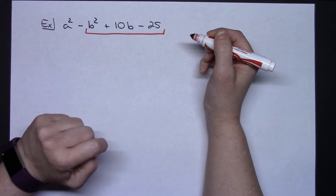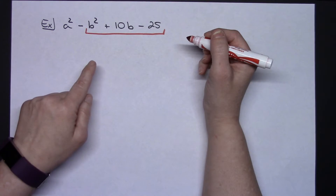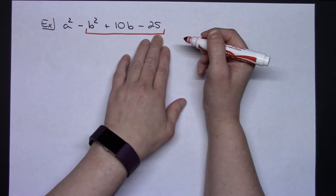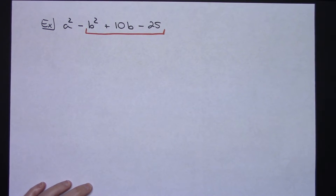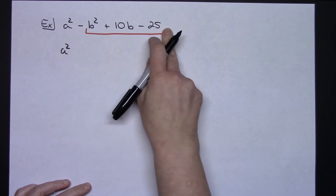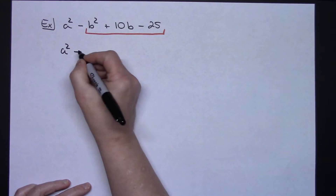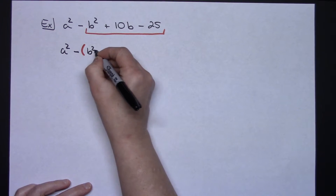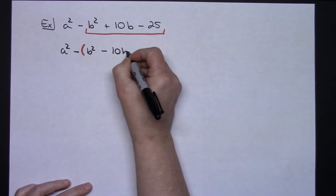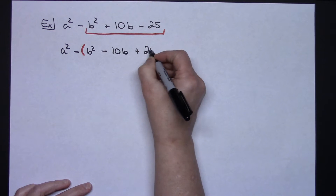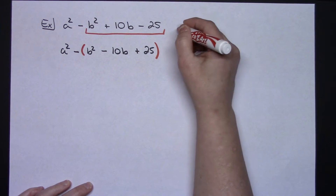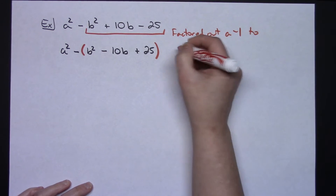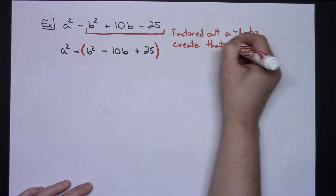As it is right now, that's not a perfect square trinomial. However if I factor out a negative one, I can create a perfect square trinomial. So I'm going to take these three terms and factor out a negative one. I'll still have my a squared, and taking out a negative one from those three terms puts the negative out in front. Inside the parentheses: that makes this a positive b squared, changes the 10b term to minus 10b, and changes the last term to a positive 25. So we factored out a negative one to create that perfect square trinomial.